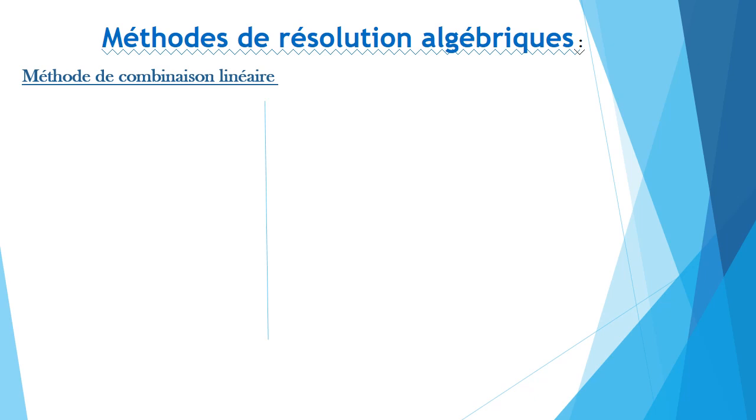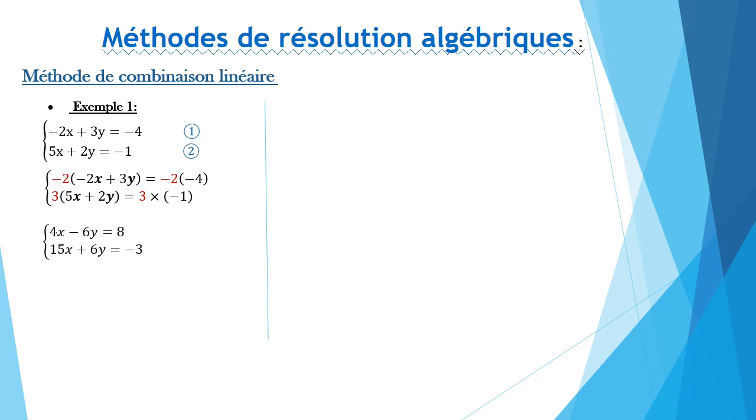La méthode de combinaison linéaire. Le principe de cette méthode, c'est de multiplier l'une ou les deux équations par des nombres convenablement choisis de manière à ce que l'une des inconnues disparaisse par addition membre à membre. Dans le système suivant, on a multiplié la première équation par moins 2 et la deuxième par 3. On développe, on simplifie et on trouve 4X moins 6Y est égal à 8 et 15X plus 6Y est égal à moins 3.